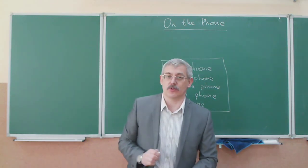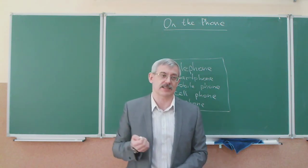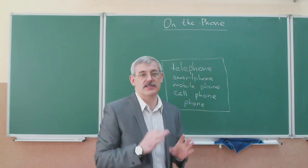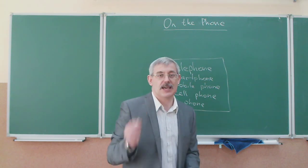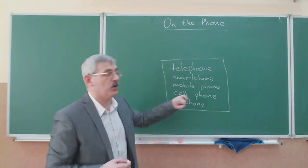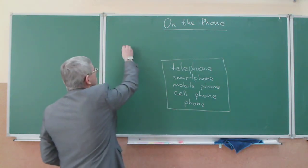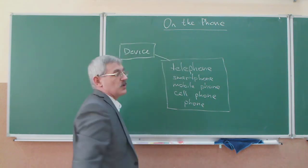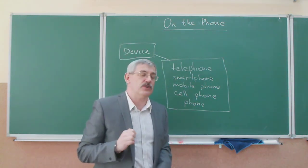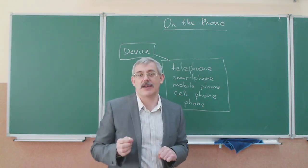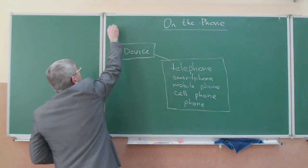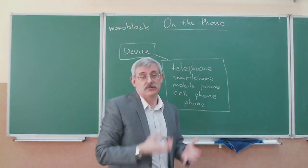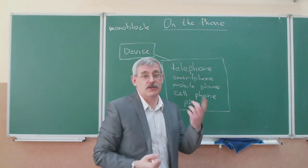When we are talking about the telephone, what do you think of first? This is a device — a kind of device which consists of some parts. So the first group of words is 'device'. The telephone can be either a monoblock — one single device — or it can be a flip phone.